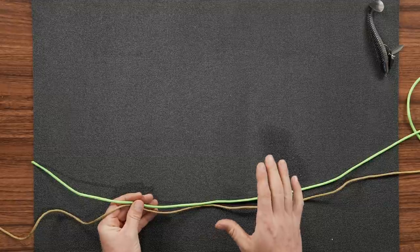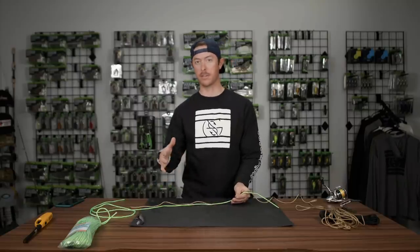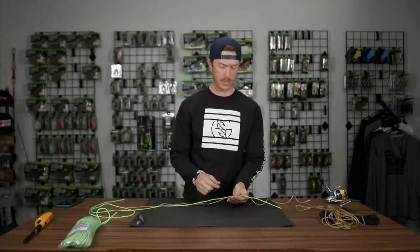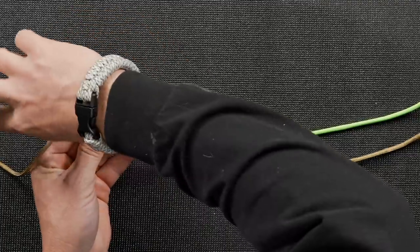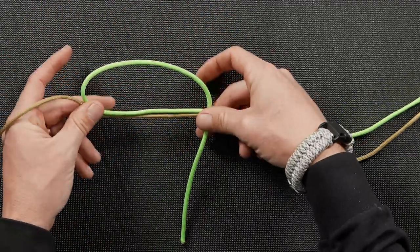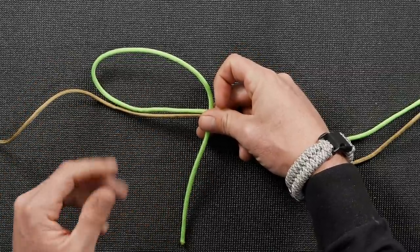And you want to do about eight or nine wraps if you're using braid, and then on the fluoro or mono, five or six wraps around. So we'll cross the lines like this. We'll come back down the line. And then we're going to go through this loop right here eight or nine times. You want to make sure you have enough tag end to do that.